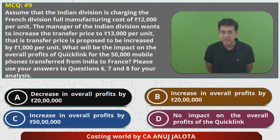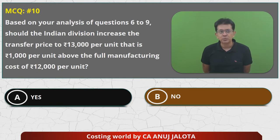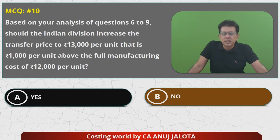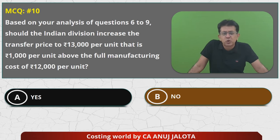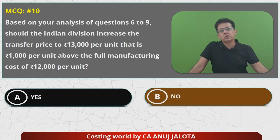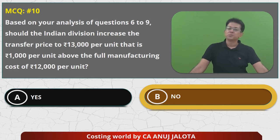MCQ 10: Based on the analysis of questions 6 to 9, should the Indian division increase the transfer price to ₹13,000? Obviously not — because overall company profit will fall by ₹20 lakhs. Thinking from the company's angle, this should not be done. Answer is B. That's it — all 10 MCQs are done.